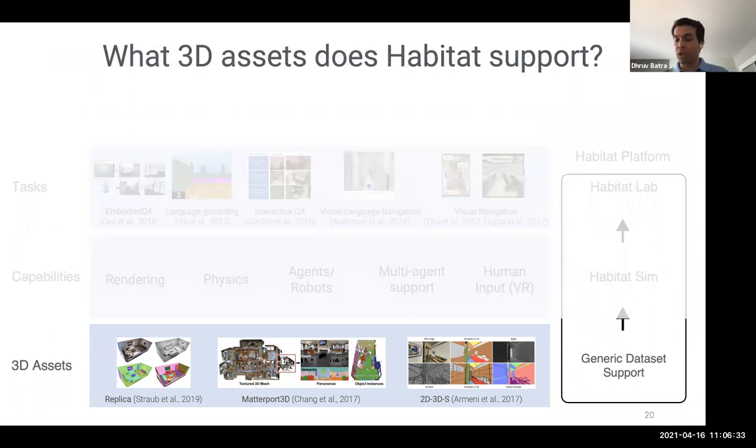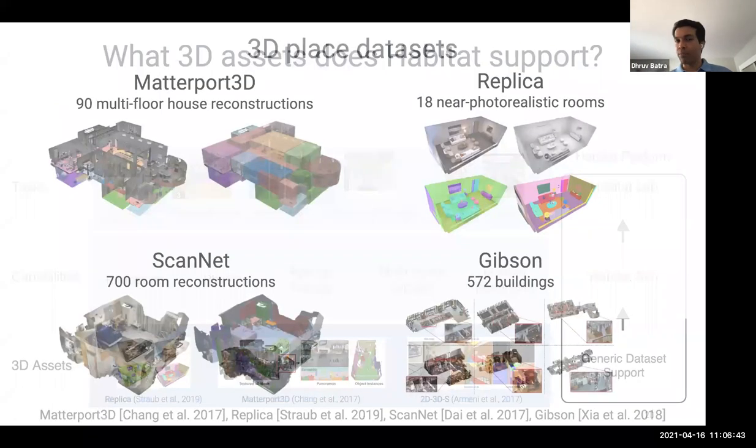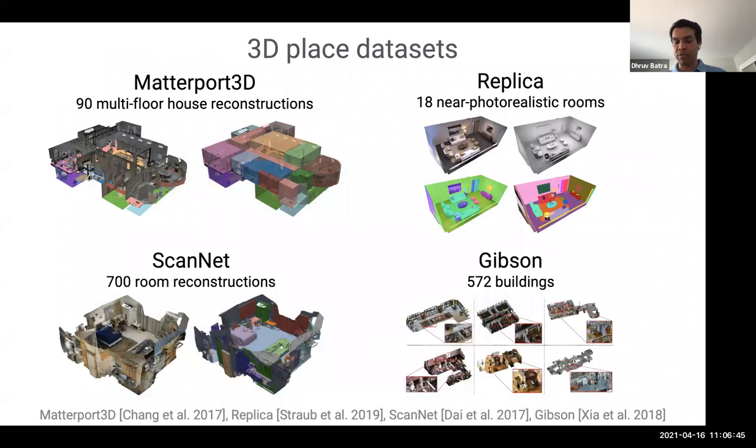We think of the software stack, if you will, or the conceptual stack of embodied AI at three levels. There are 3D assets at the bottom, there are simulation capabilities in the middle, and there are tasks at the top. In disembodied AI, typically, the middle layer is missing. At the very bottom level are 3D assets that you situate an agent in. And Habitat supports a large number of scans of indoor environments.